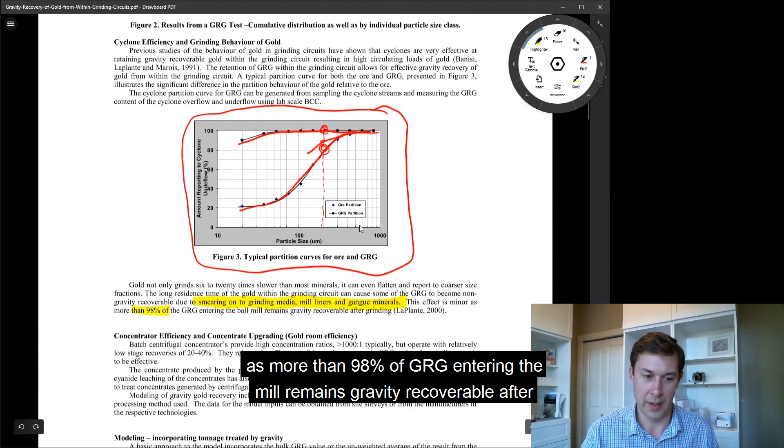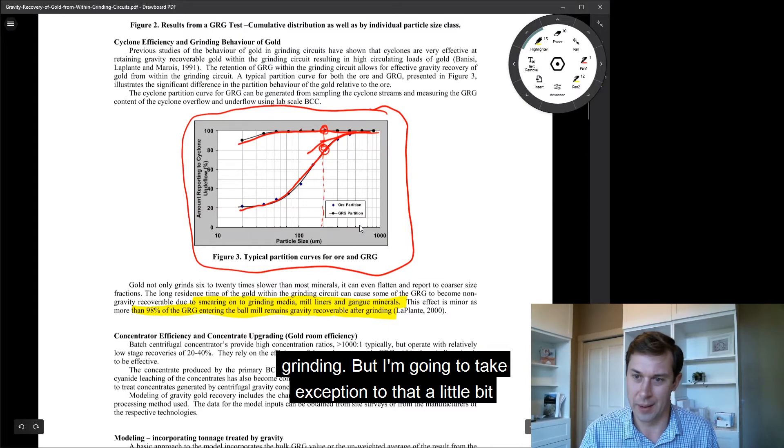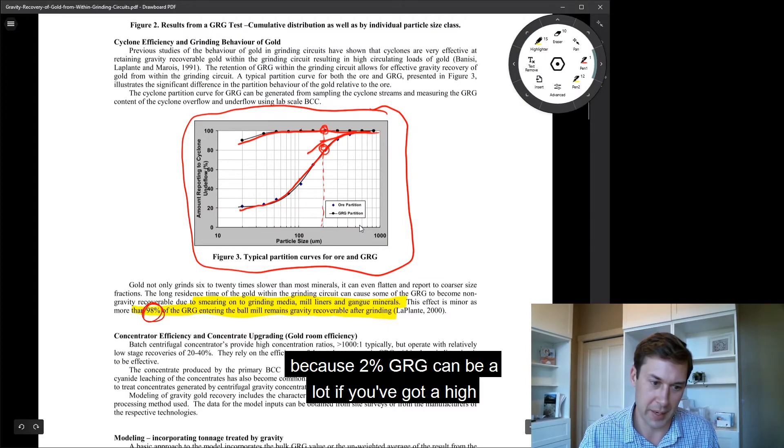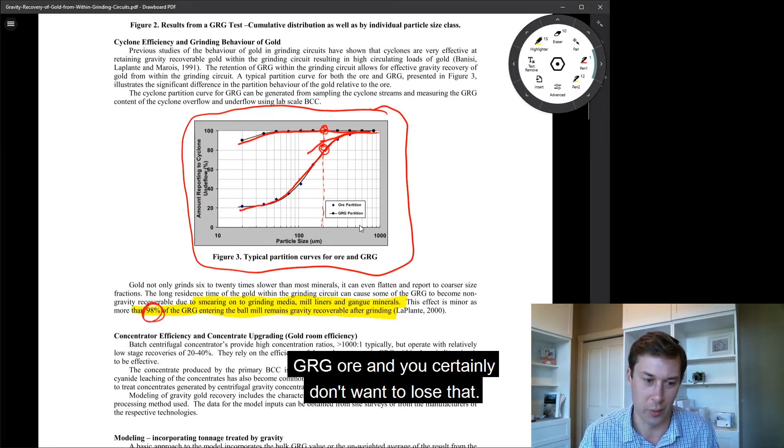More than 98% of GRG entering the mill remains gravity recoverable after grinding. But I'm going to take exception to that a little bit because 2% GRG can be a lot if you've got a high GRG, and you certainly don't want to lose that.